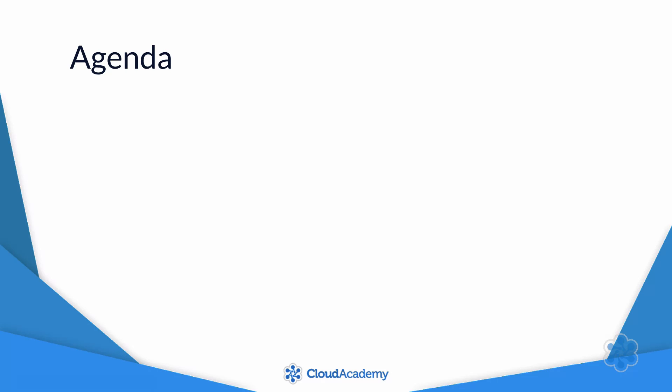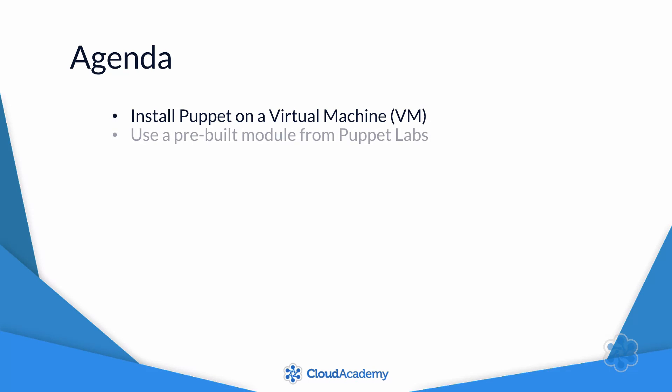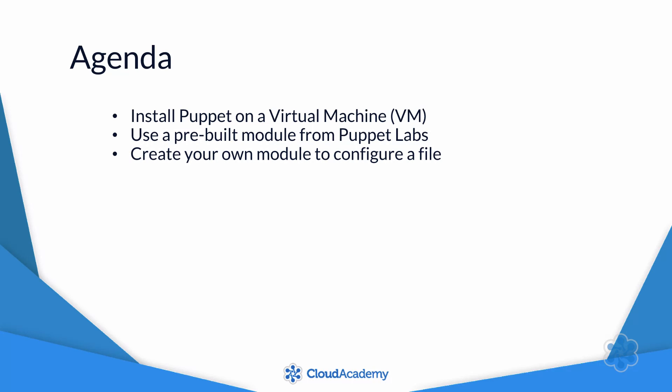This is a hands-on course with exercises every step of the way to give you experience using Puppet. We'll start by installing Puppet on a VM, that is a virtual machine, on your desktop. Then you'll install and use a pre-built module from Puppet Labs to perform a simple configuration on your VM. After that, I'll show you how to create your own module, which you'll use to configure a file.